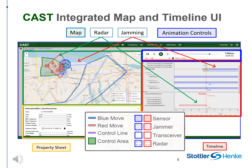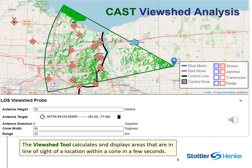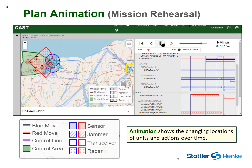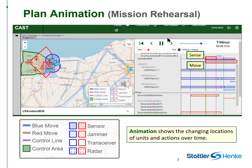Colors and patterns of the map and timeline objects indicate the type of movement and action. The viewshed tool calculates and displays areas that are in line of sight of a location within a cone in a few seconds. The animation shows the changing locations of units and actions over time. During the animation, a red vertical line sweeps from left to right in the timeline to show the current time in relation to the timing of the planned and assumed events.